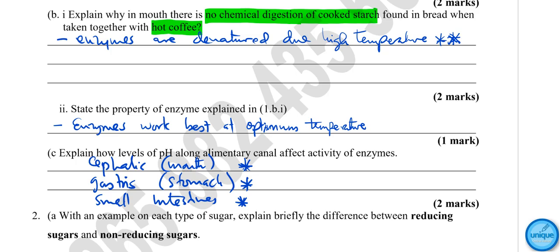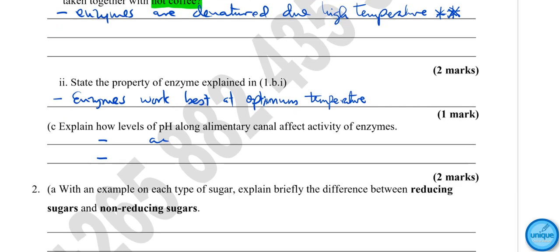In the intestine, it's basic condition. So to answer this question, different levels of pH along the gastric tract affect the activity, making other ones working best in acidic conditions while other enzymes working best in basic condition.